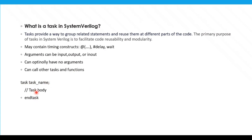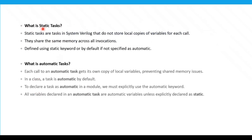What is a static task? Static tasks are tasks in SystemVerilog that do not store local copies of variables for each call — they share the same memory across all invocations. Which means when you are calling a static task, for each call it will use the same memory; it will not create different memory. To declare a static task, you use the static keyword. By default, inside a module, a task is static.